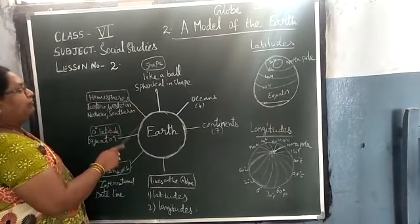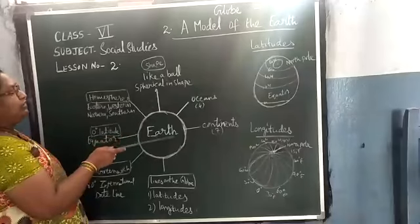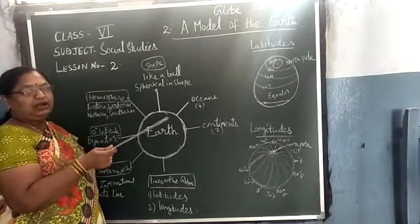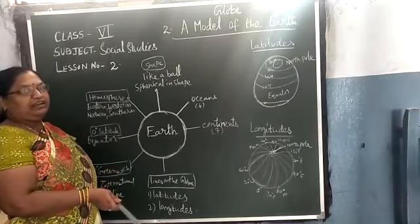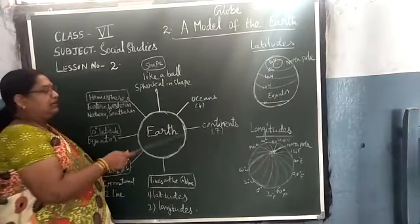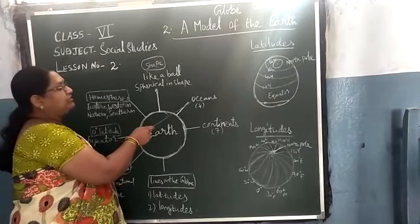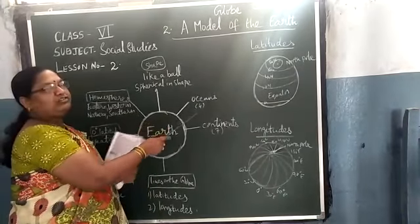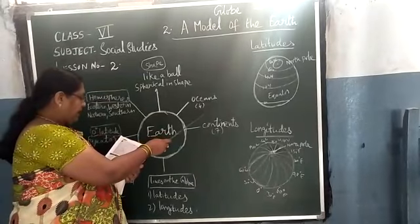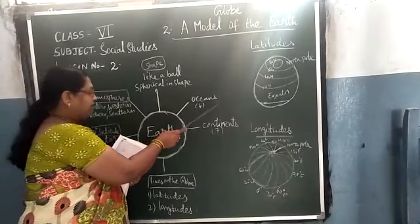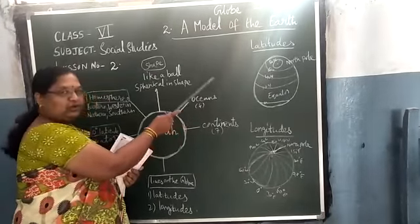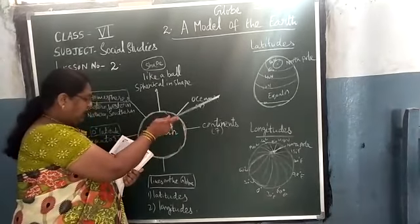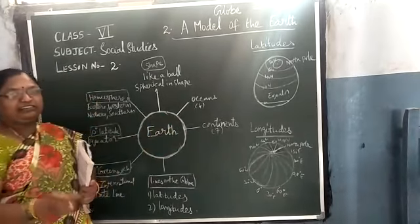We already know how many oceans are there. There are 4 oceans. They are: Pacific Ocean, Atlantic Ocean, Indian Ocean, and Arctic Ocean.